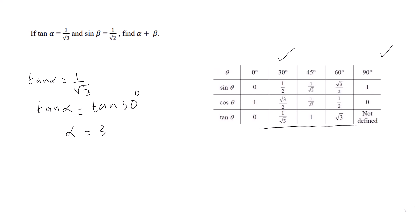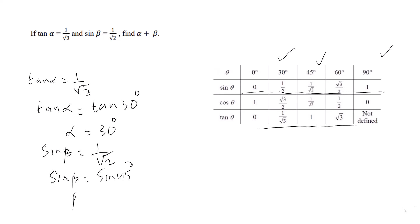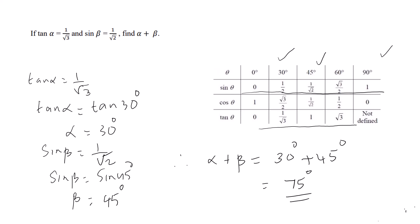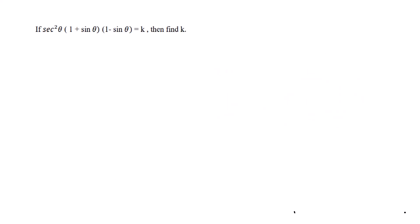tan α = tan 30° means α = 30°. Now for β, they have given sin β = 1/√2. Checking the sin row in the table, we get 1/√2 for θ = 45°, so sin β = sin 45°, which means β = 45°. Therefore, α + β = 30° + 45° = 75°.